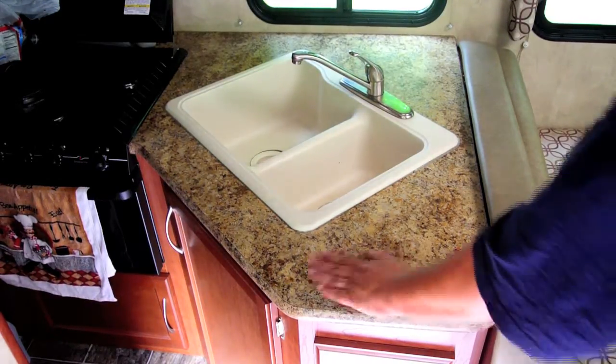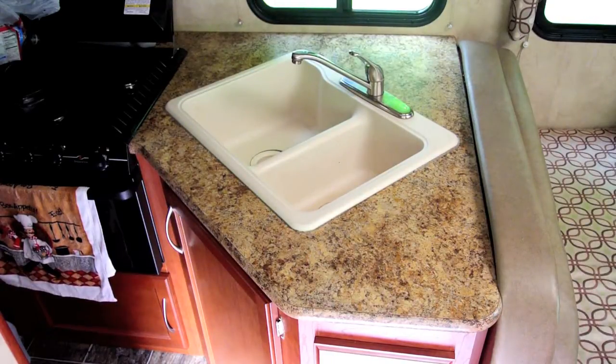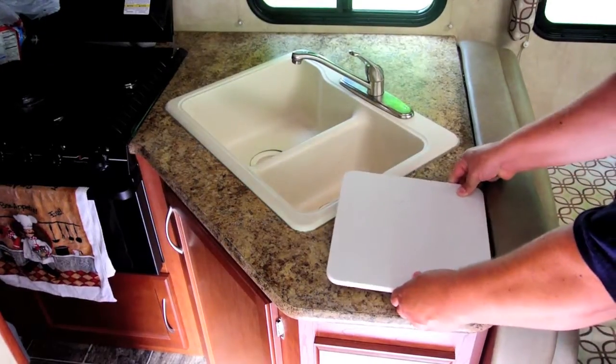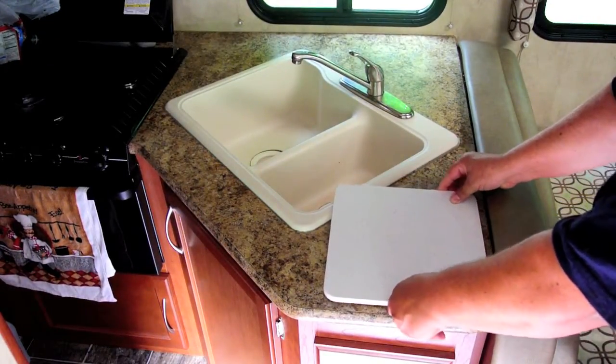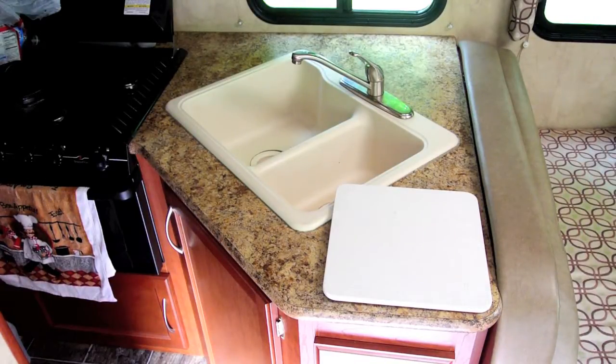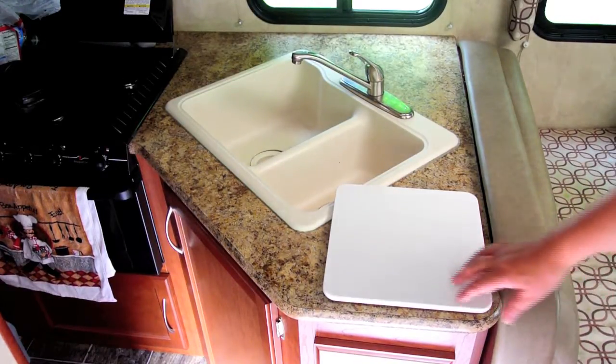This little area here is about the only place we've got to easily use a chopping board, and what we have is this chopping board that we like to use here. It's a nice piece of corian, it's about 12 inches square, but the problem is, it doesn't fit here.